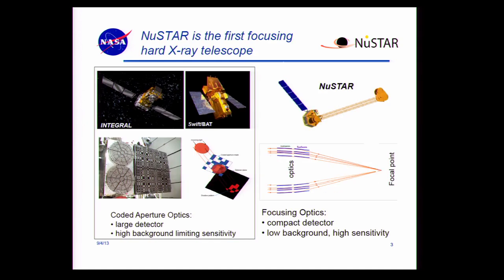NuSTAR is the first focusing hard X-ray telescope in orbit. Prior to NuSTAR, there were a couple of satellites that could image in hard X-rays but they used a coded aperture mask technique. With the coded aperture mask, it's really good for a large field of view and it makes images, but very coarse images. Also, you have to use a very large detector, which leads to very high backgrounds. In contrast, NuSTAR focuses the hard X-rays and allows you to use a small detector — very low background and very high sensitivity.